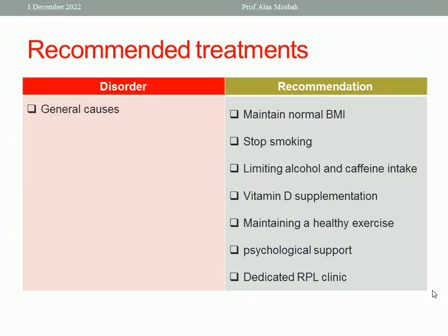General recommendations include: maintenance of normal body mass index, stopping smoking, limiting alcohol and caffeine intake, vitamin D supplementation, maintaining healthy exercise, and psychological support. A dedicated recurrent pregnancy loss clinic is important as this condition severely affects families. Don't forget psychotherapy, as recurrent pregnancy loss is associated with significant psychological distress.